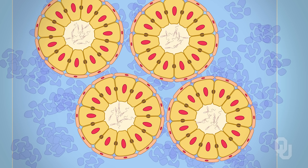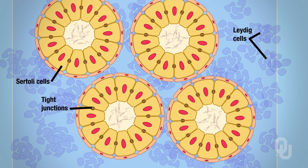Imagine taking a garden hose and cutting it in half — this would be similar to cutting the tubule in half and looking at what's inside. The lumen of the seminiferous tubule is lined by cells called Sertoli cells. These Sertoli cells are connected via tight junctions. Lining the outside of the Sertoli cells is a layer of smooth muscle. Outside of the Sertoli cells are the Leydig cells.